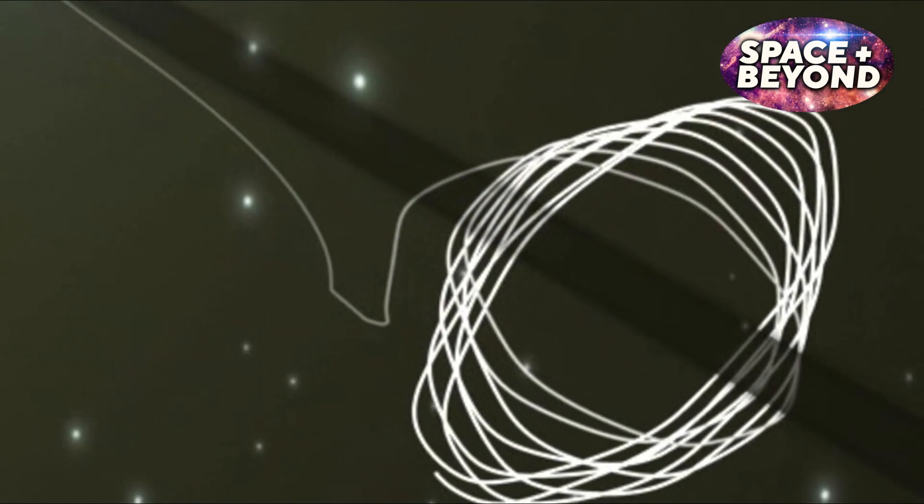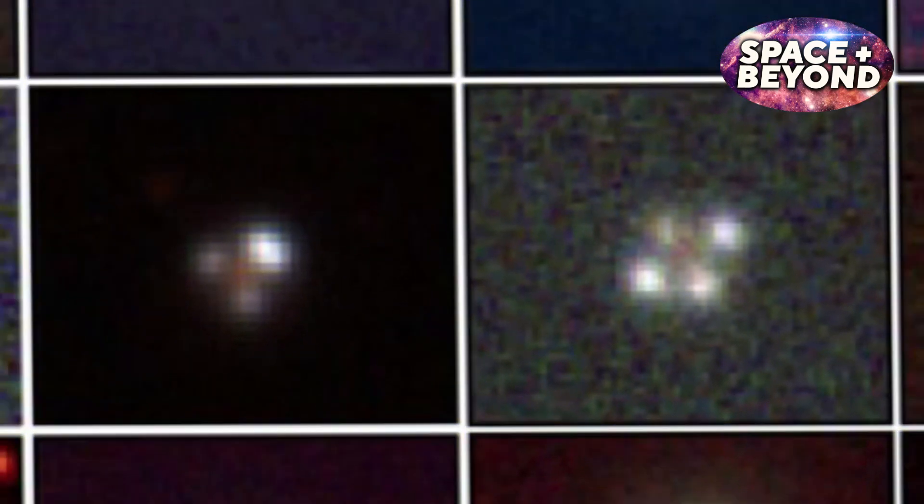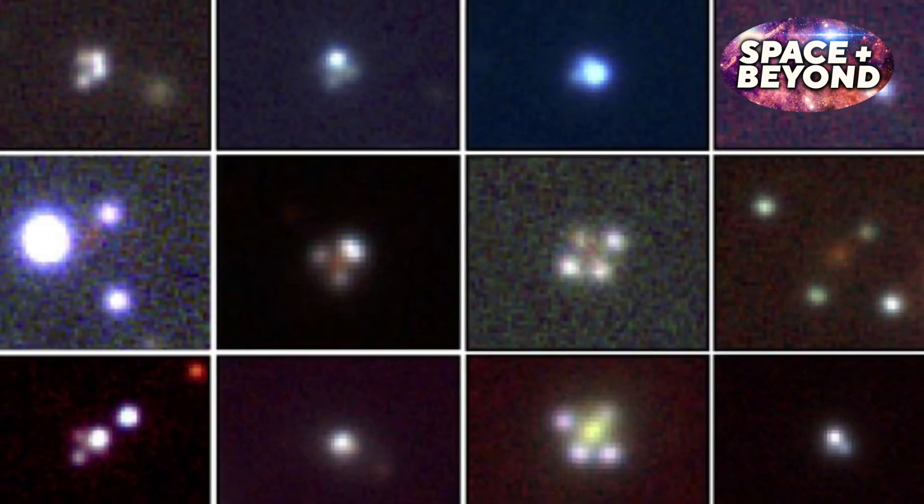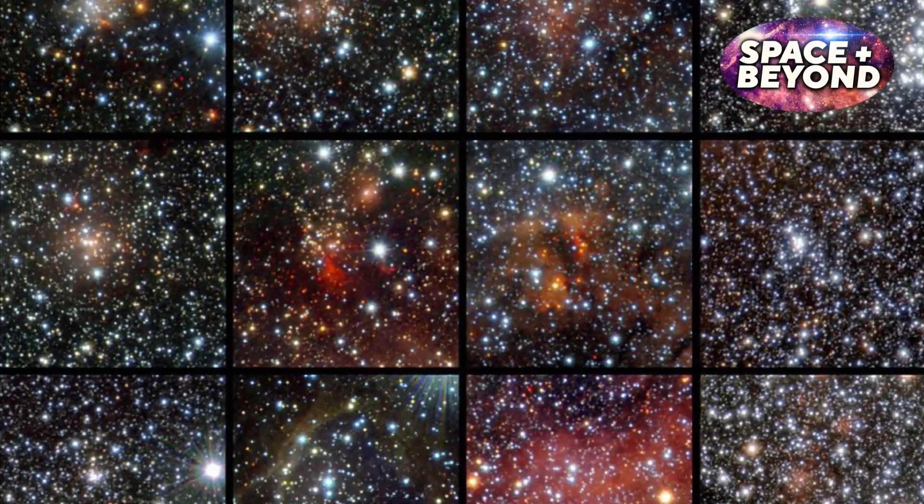This stable orbit allows Gaia to observe stars up to 10,000 times brighter than those studied by Hubble or Webb telescopes. Therefore, it's able to detect even faint objects that other telescopes can't see, such as distant galaxies or newly formed dusty clusters of stars.